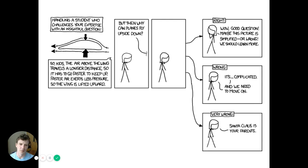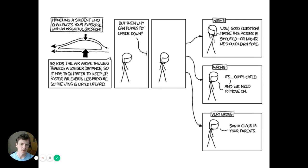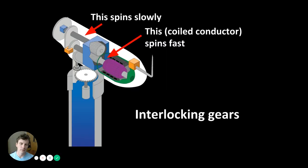This pulls the turbine in the direction that it spins, as opposed to pushing it. There's a comic that offers the same explanation about why airplanes can fly using aerodynamic lift — the teacher is challenged about why airplanes can fly upside down. It's complicated and we're going to move on.